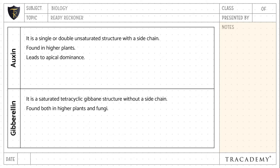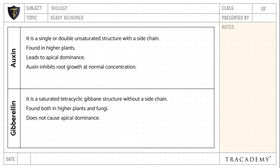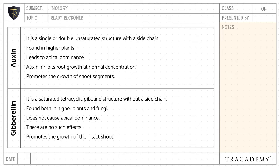Auxin leads to apical dominance; gibberellin does not cause apical dominance. Auxin inhibits root growth at normal concentration, which is not seen in gibberellin. Auxin promotes the growth of shoot segments, whereas gibberellin promotes the growth of intact shoot.